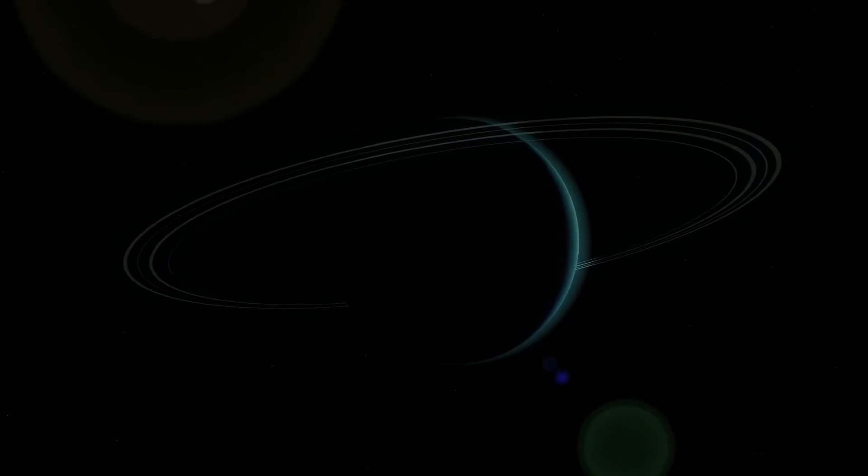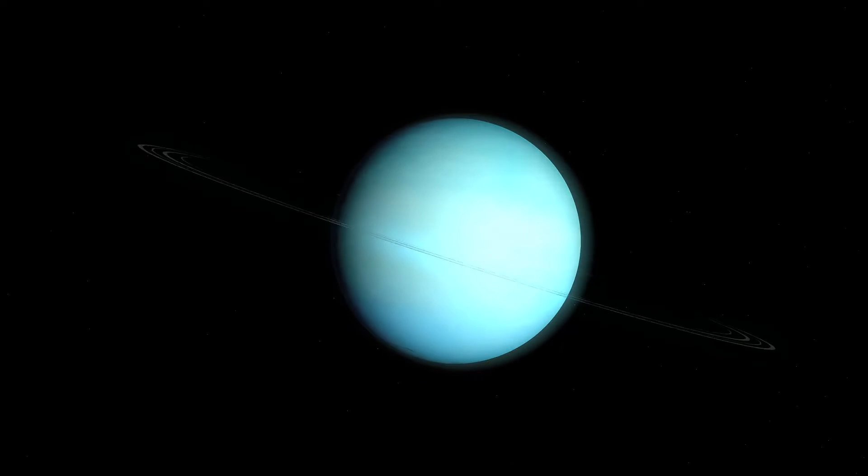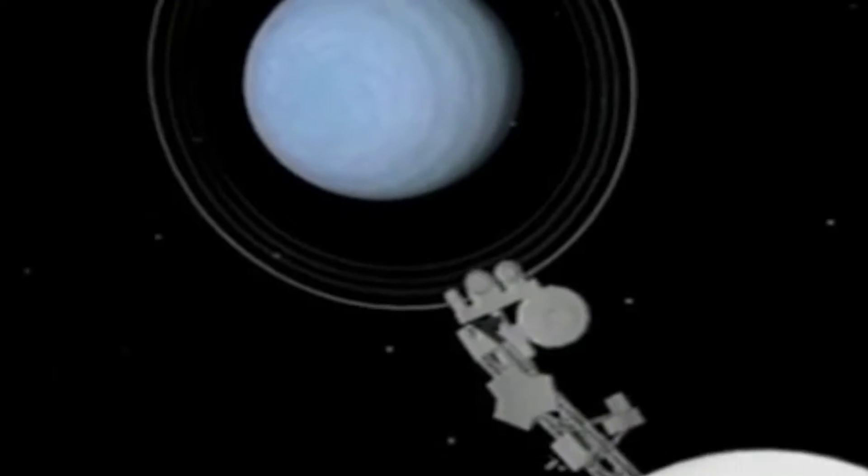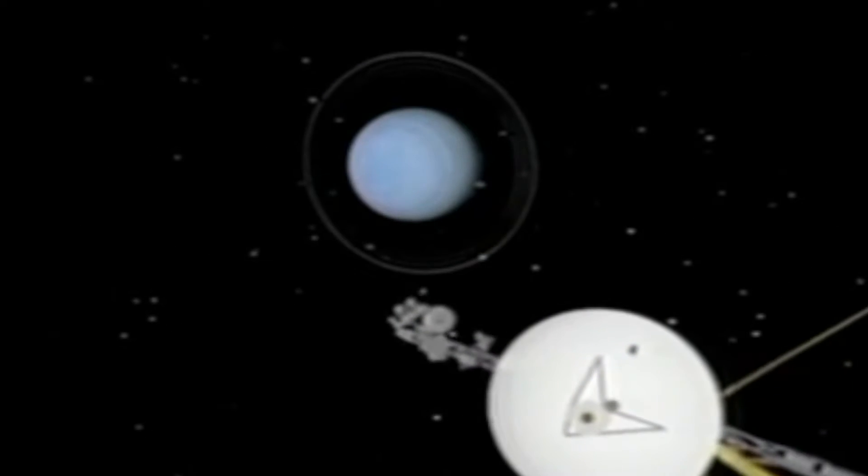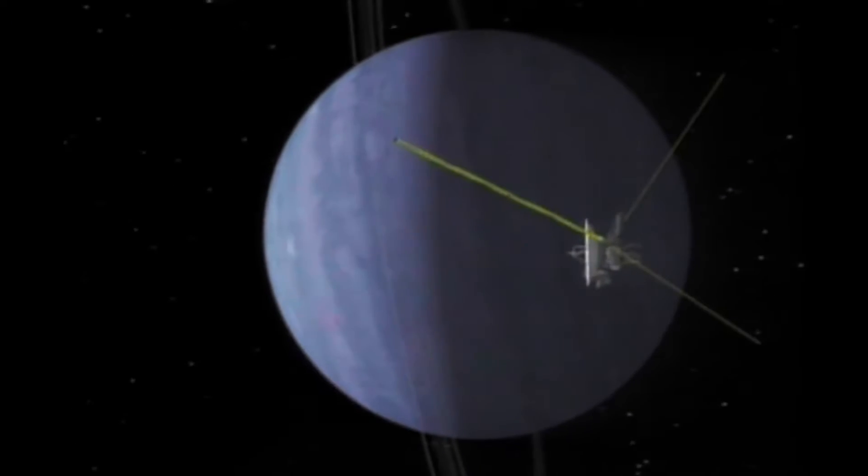Named after the Greek celestial god Uranus, the planet was discovered in 1781 by astronomer William Herschel. The seventh planet was known as George from 1781 to 1850 and was not renamed Uranus until 1850.